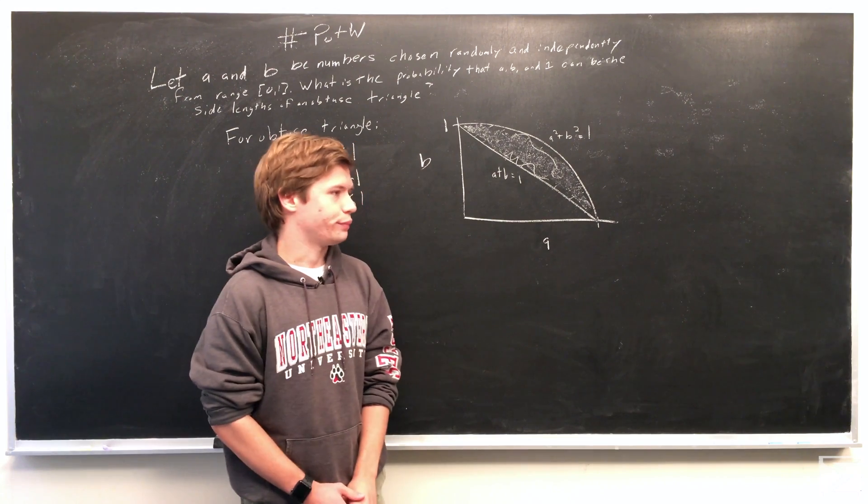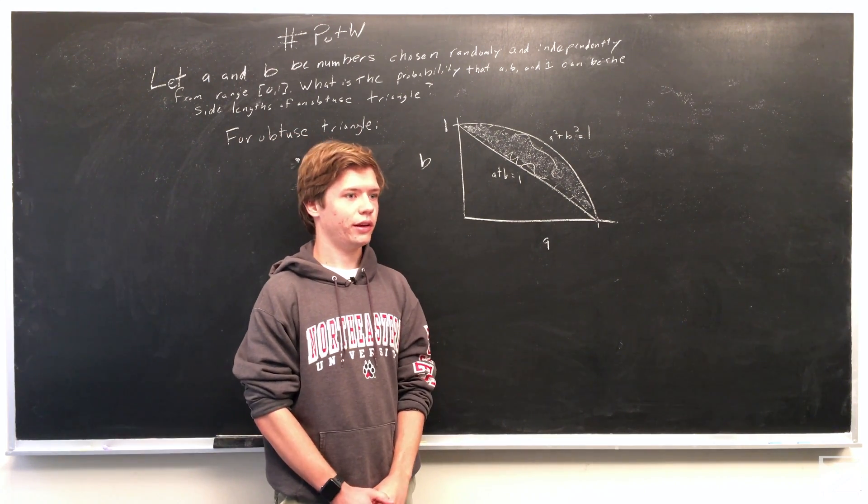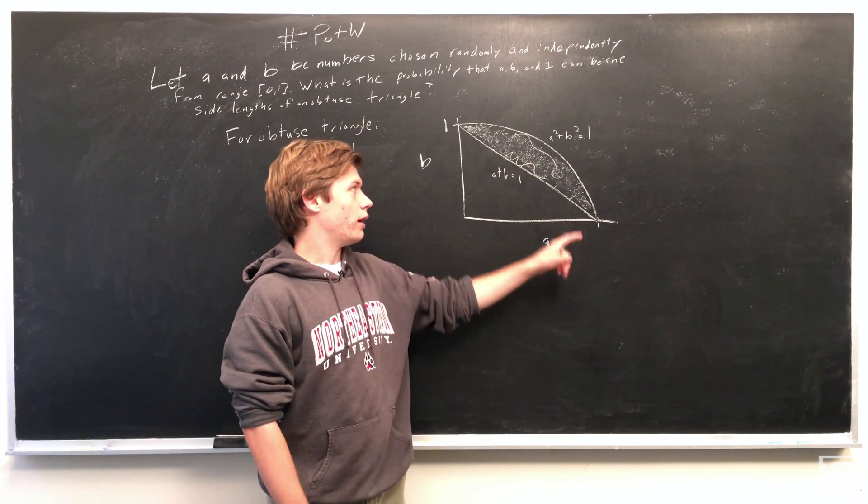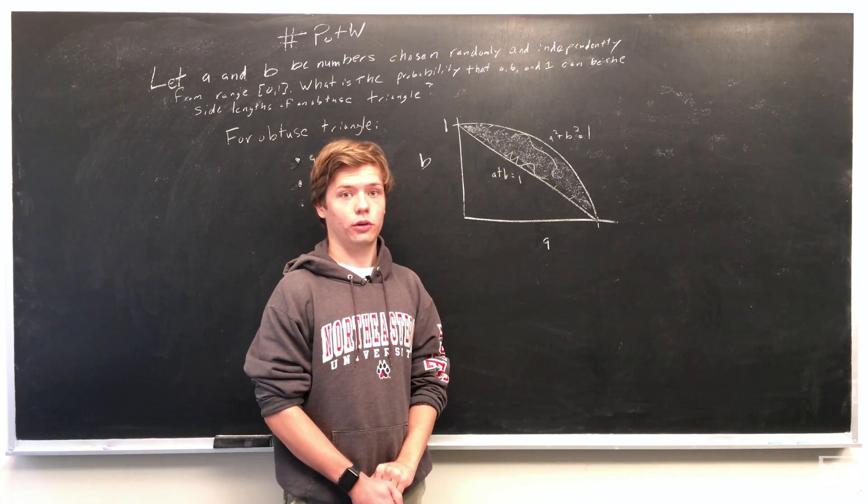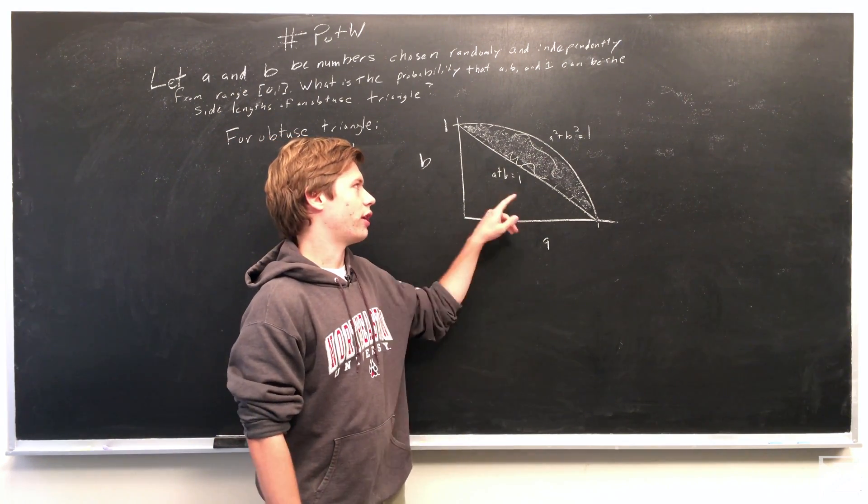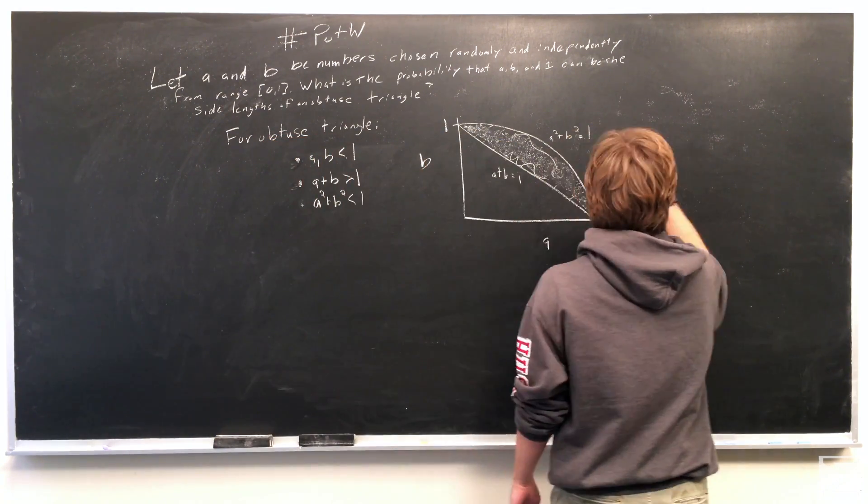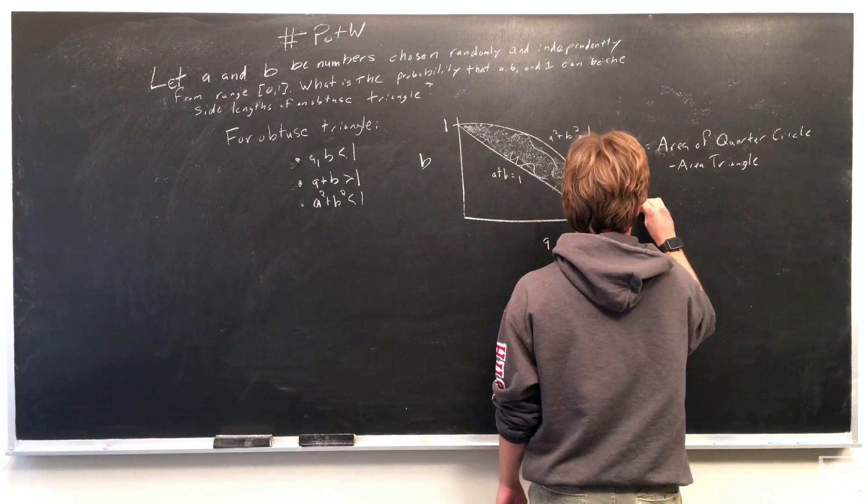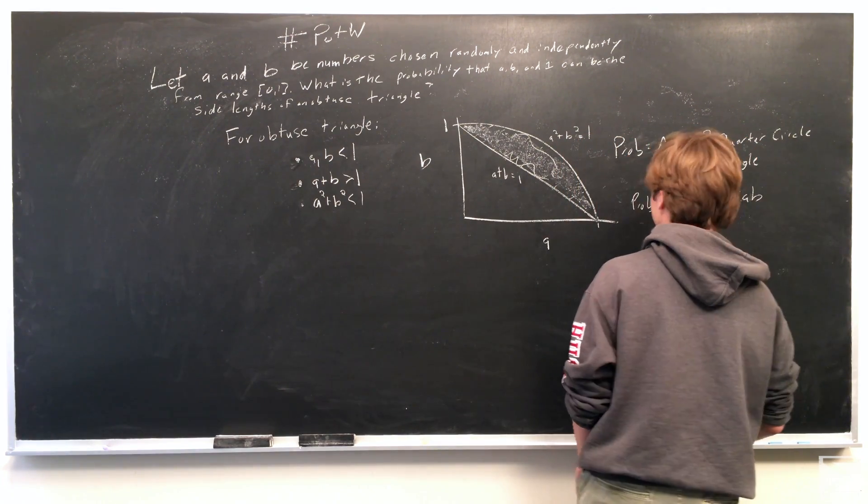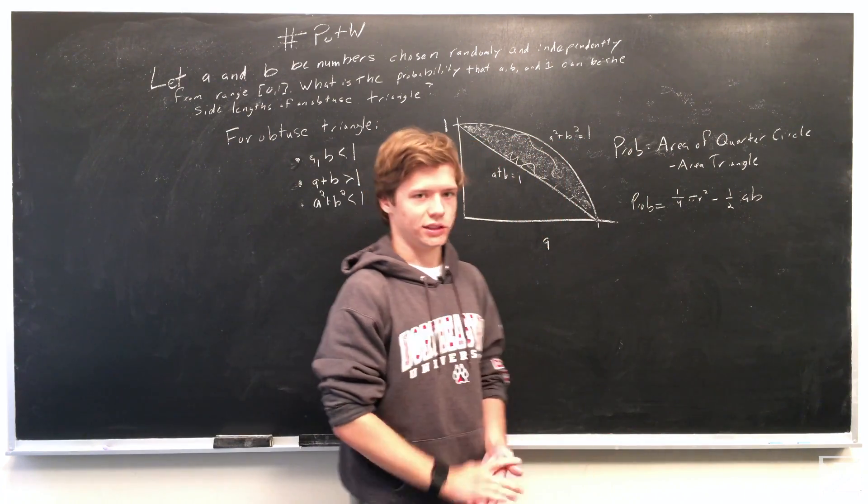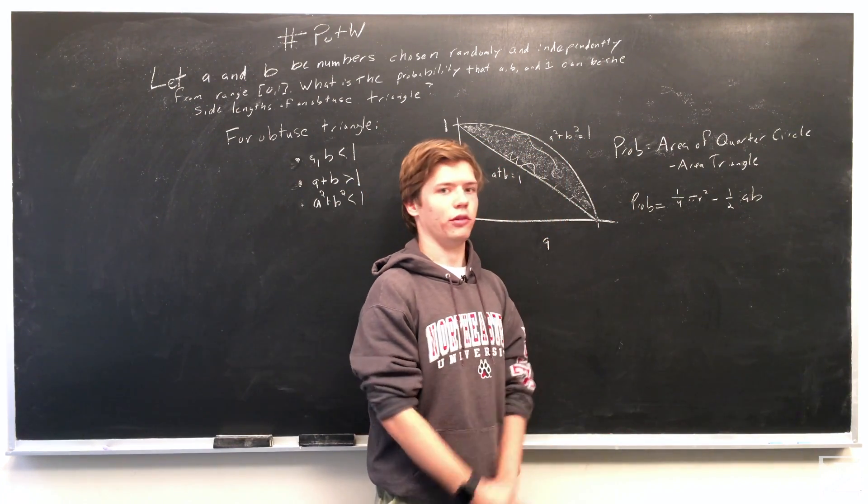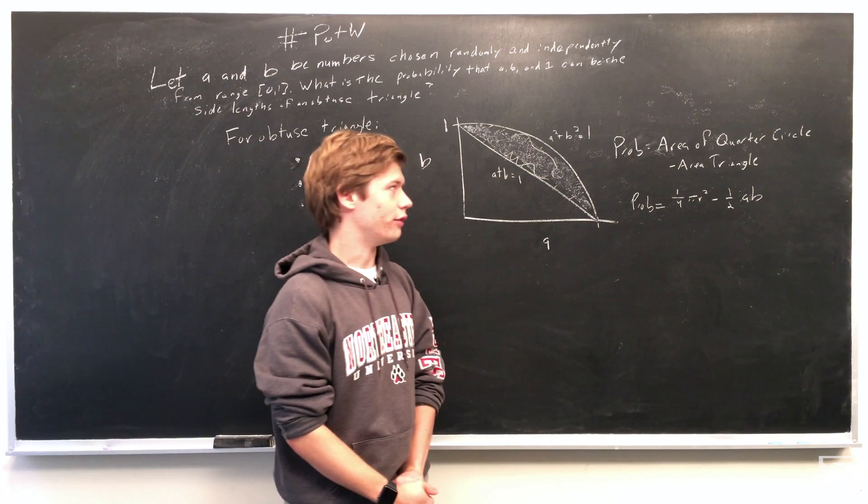So to do that, we just take the formula for the area of a quarter circle and then the area of a triangle. So this is just a formula written out: area of a quarter circle minus the area of a triangle.